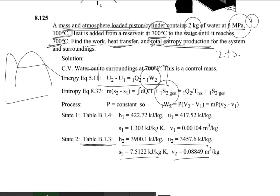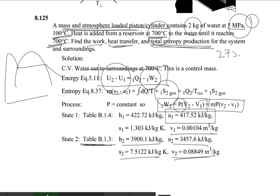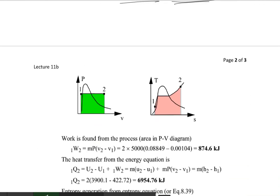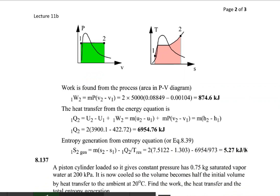For work done, since this is a constant pressure process, the formula is: W = P(V2 − V1). We have V2 from the superheated table, V1 from the compressed table, and P = 5 MPa. If internal energy is not directly in your steam table, use u = h − Pv. Combining these with the first law, the heat transfer Q from state 1 to 2 equals 6951.76 kilojoules.